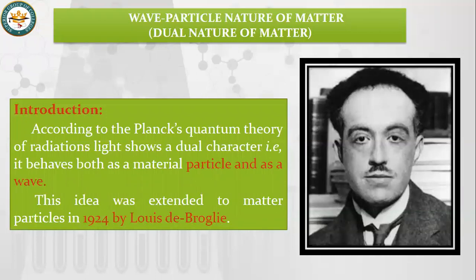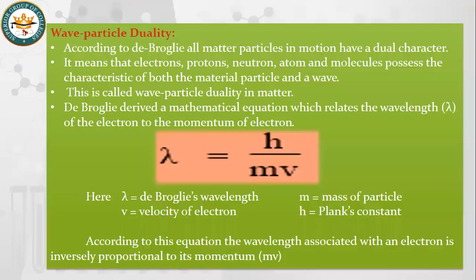Next, we will study the wave-particle nature of matter. Before this, we studied Planck's quantum theory, which told us that light has a dual nature — both particle-like and wave-like. In 1924, de Broglie elaborated this concept and proved that matter also shows dual nature, behaving both as waves and as particles.